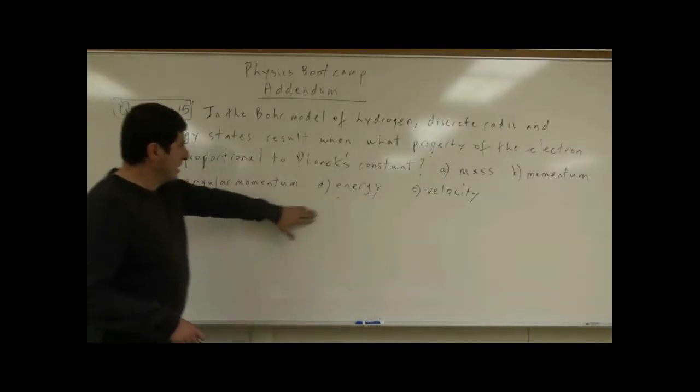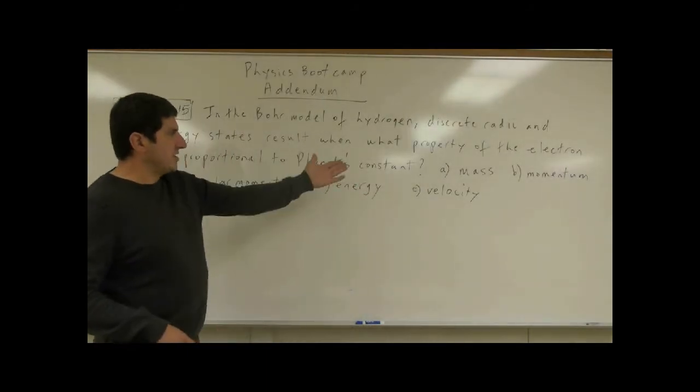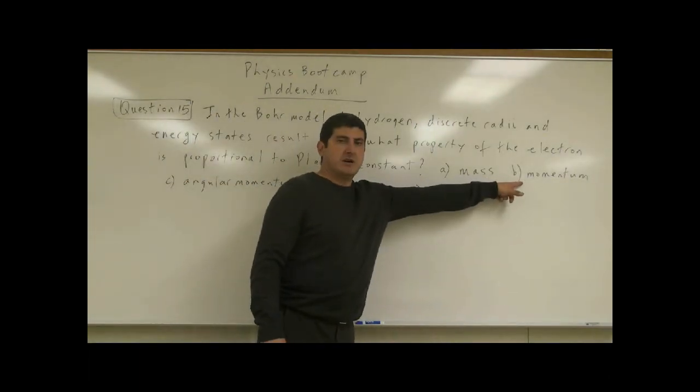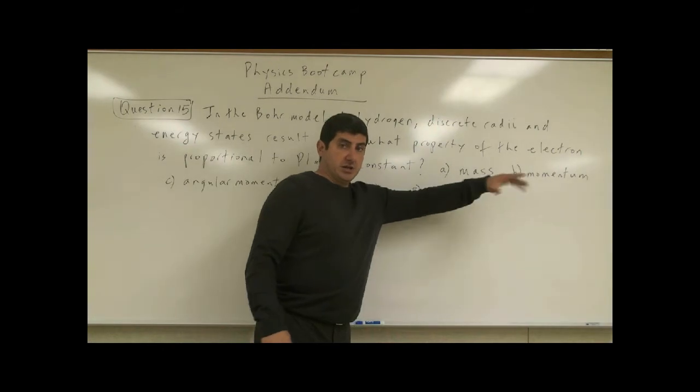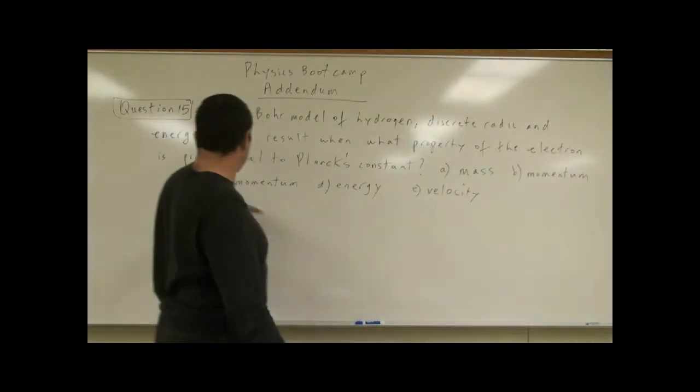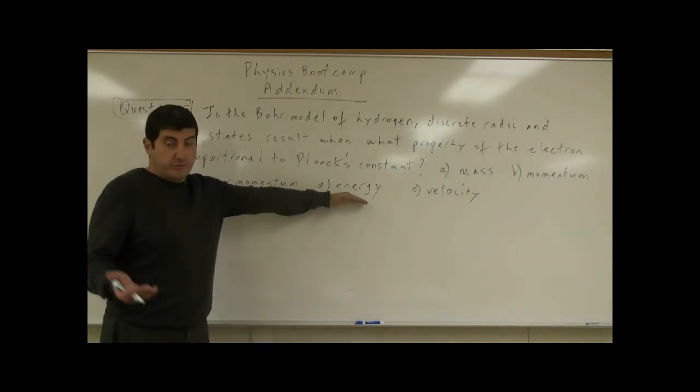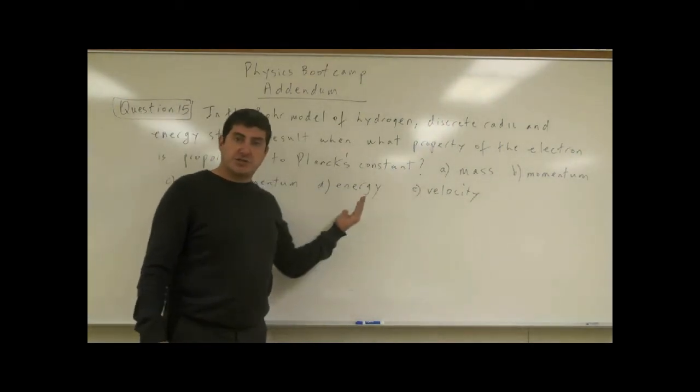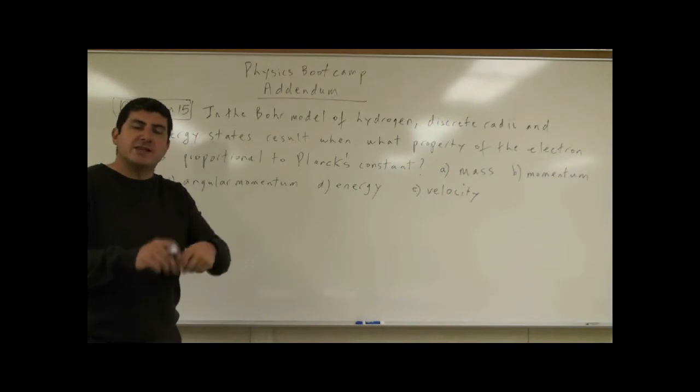If you think about it, each of this is partially true. It is true that the momentum of the electron comes in certain discrete levels. It's true that angular momentum, it's of course true that energy and velocity, they all come in certain discrete levels.